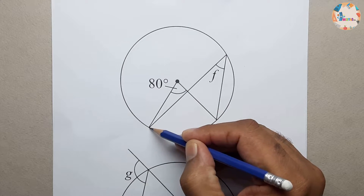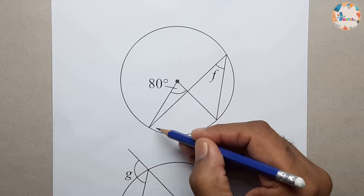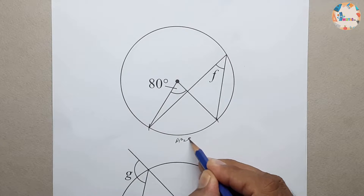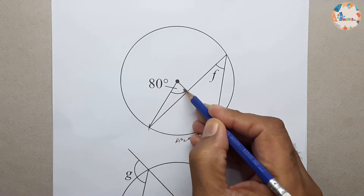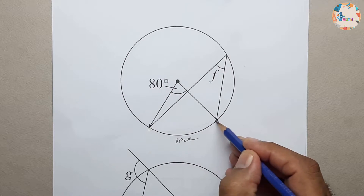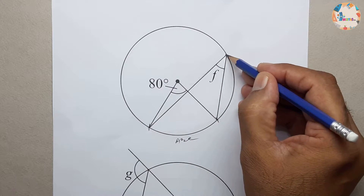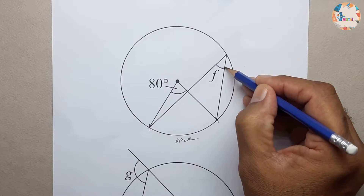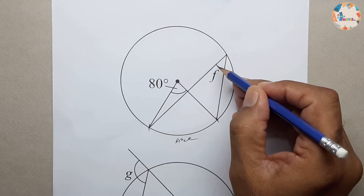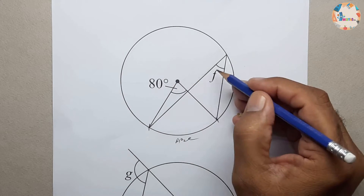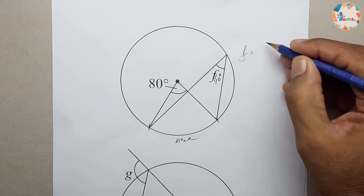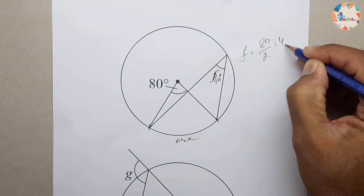To practice this rule, let's go through the sample question. This is the radius and the center. If we consider this arc, the angle at the center is 80 degrees. The angle from the same arc extending to the circumference is F, which we need to find. We know F is half the center angle, so half of 80 is 40. F equals 80 divided by 2, which equals 40 degrees.